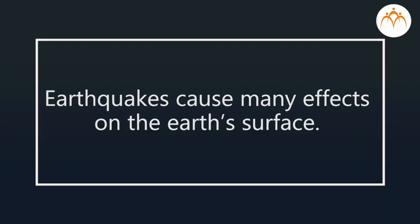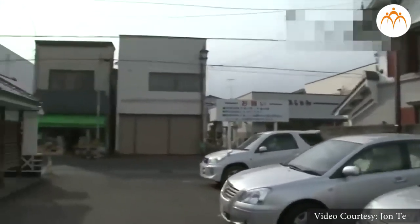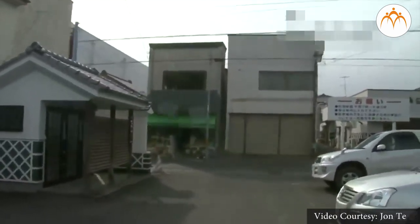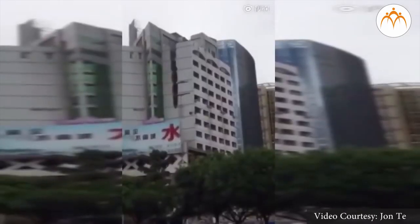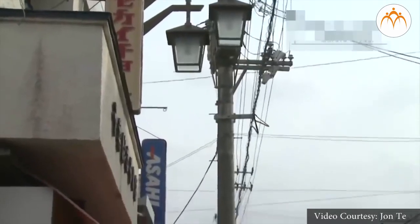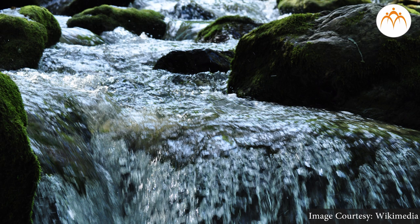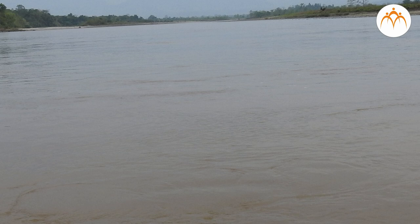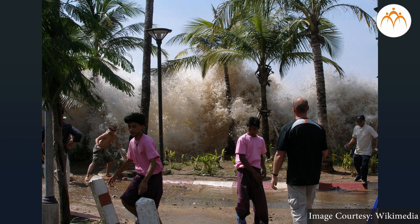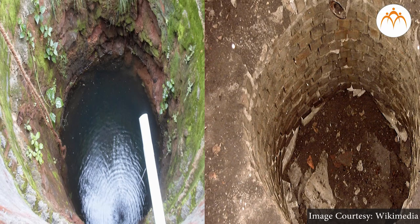Earthquakes cause many effects on the earth's surface. If the earthquake is high on the Richter scale, the loss of life and property is tremendous — houses, buildings, roads, railways, and electricity poles are damaged. It also threatens biodiversity. Rivers can change their course and make new meanders. When an earthquake happens on the seafloor, it threatens the coastline area. Sometimes dry wells become full of water and sometimes wells dry out due to the earthquake.